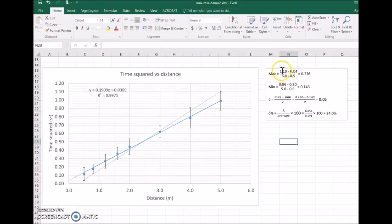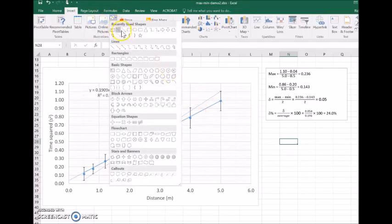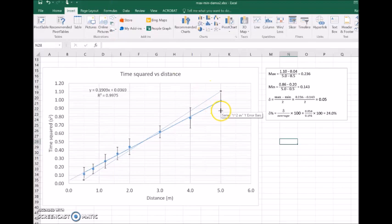So the change in Y is 1.1 minus 0.04. The change in X is from 5 down to 0.5, so that gives a gradient of 0.236. Now I can repeat that for the minimum line of best fit, so I'll add another line here.